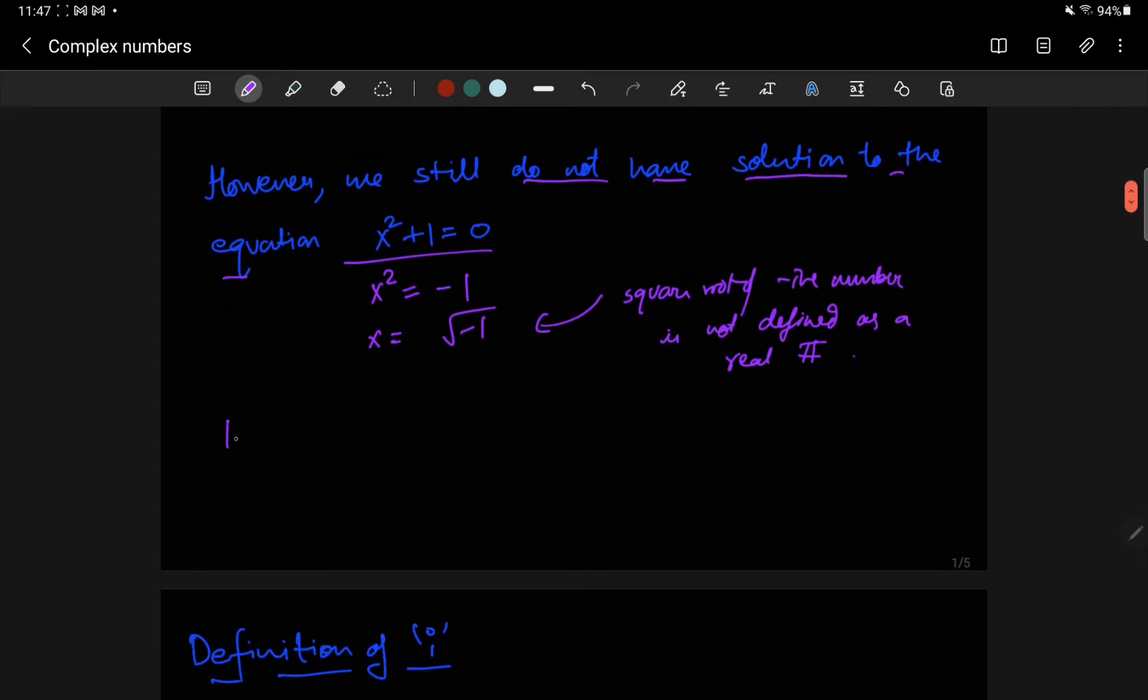So the idea is to define a number which is a solution to this equation, x squared plus 1 equals 0. So it's a little different in the sense that we are not saying that here's a number and it's a solution to this. We are saying here's an equation, I want a solution to this, and I'm going to call the solution something. And I'm going to say that that is the new number.